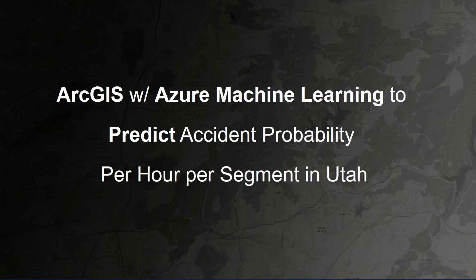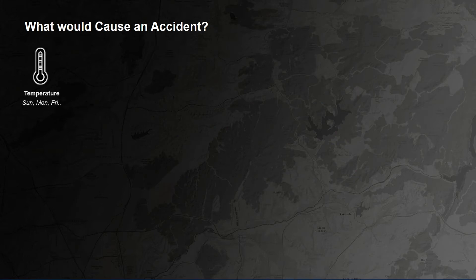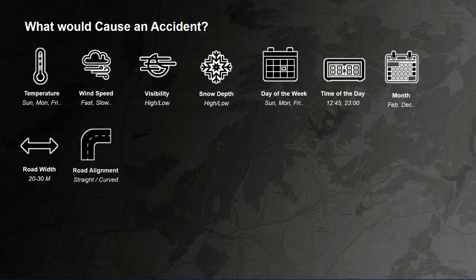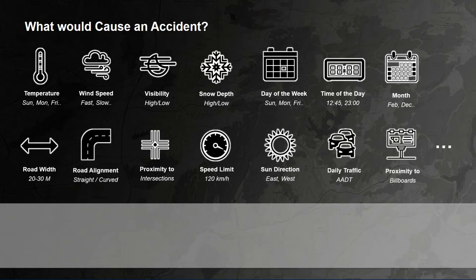We're going to use ArcGIS with Azure Machine Learning to predict the probability of accidents per segment per hour in Utah. But before jumping to machine learning, we asked ourselves: what could cause an accident in the first place? Is it weather features like temperature, rain, fog? Or time features like time of the day, rush hour, day of the week? Or spatial features like proximity to intersections, road seniority, the direction of the road, the sun direction, or other factors?